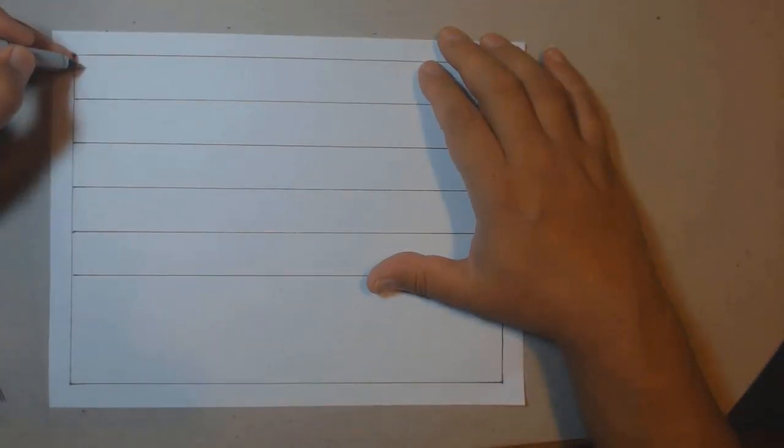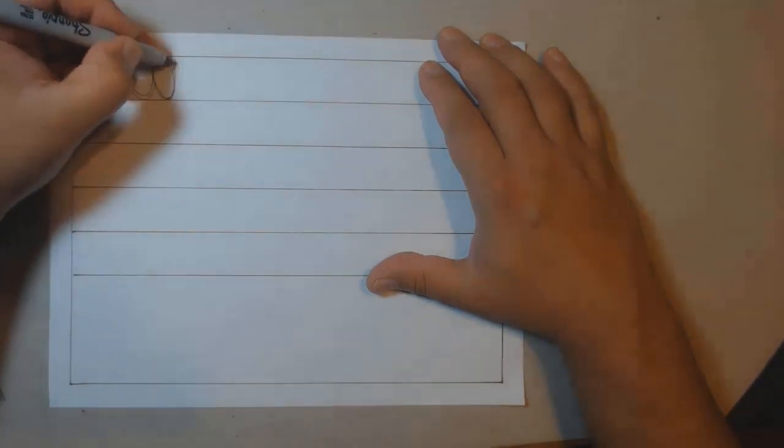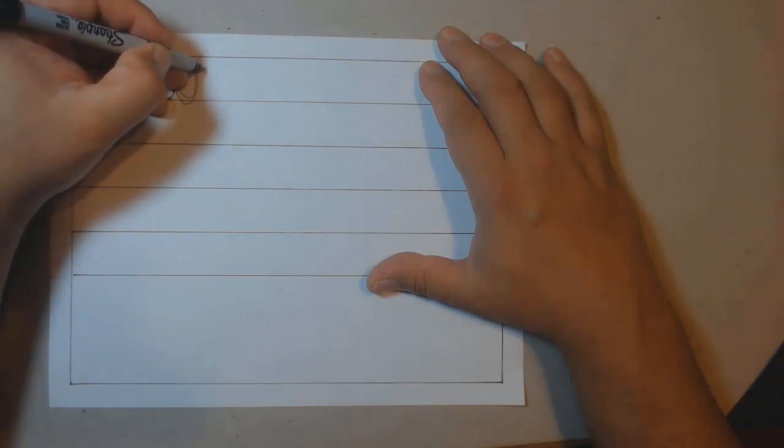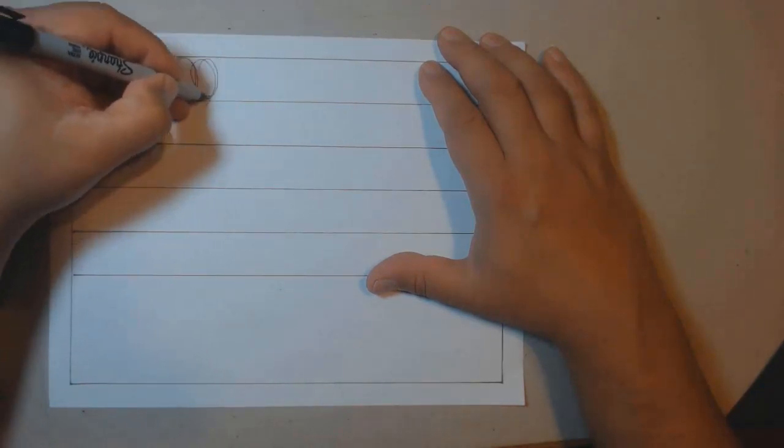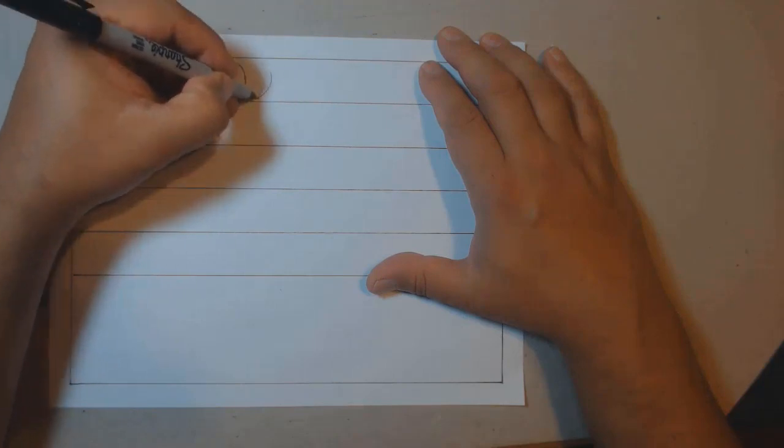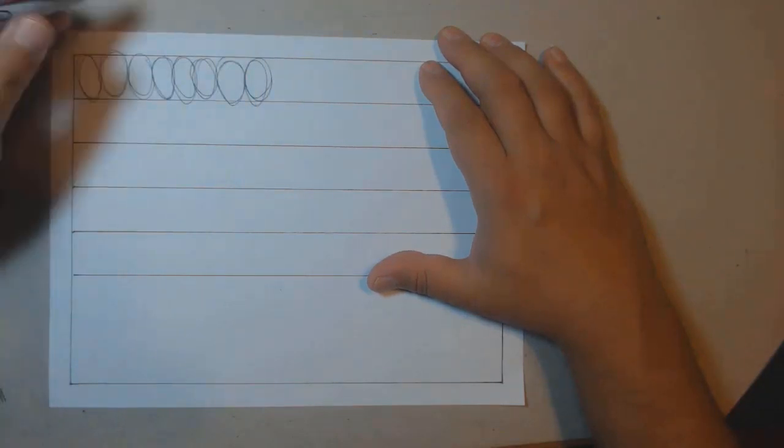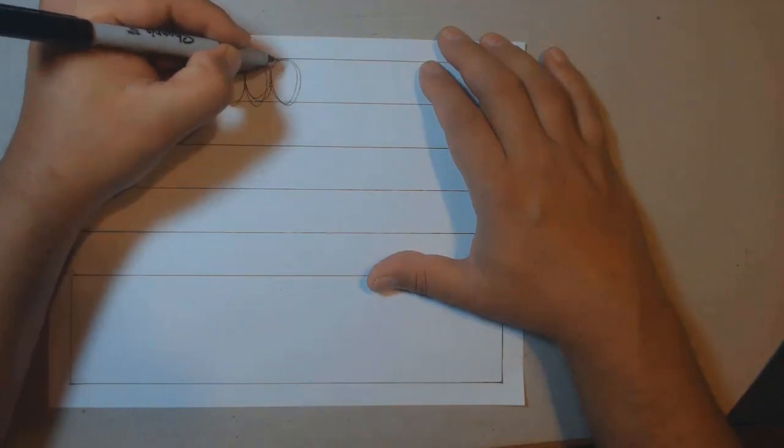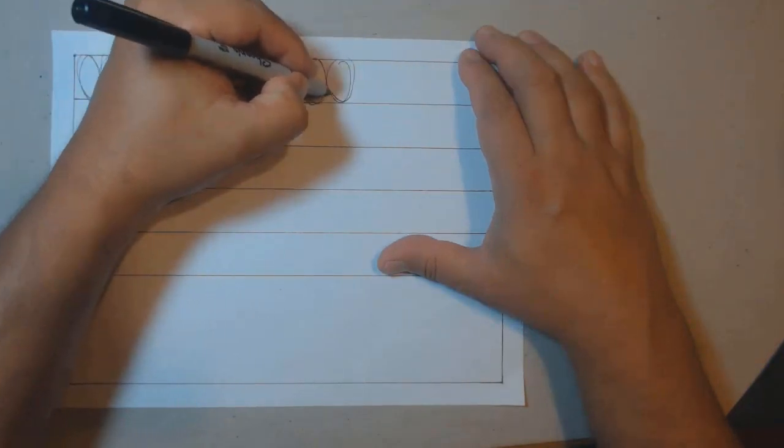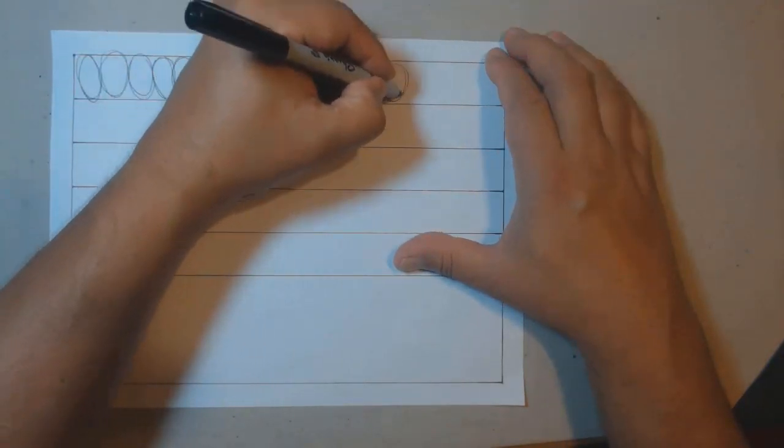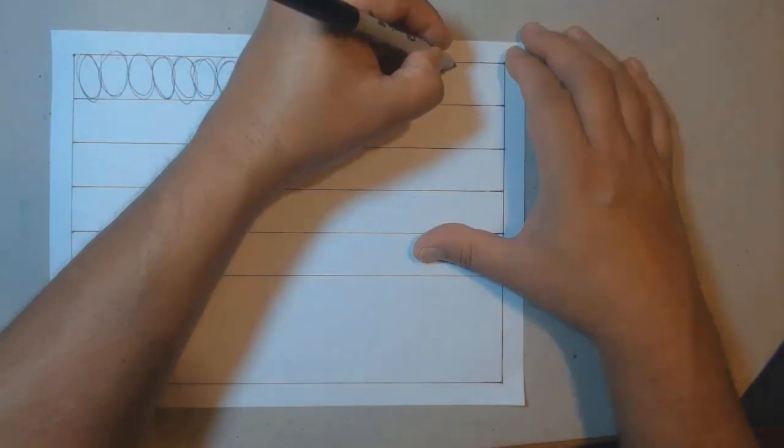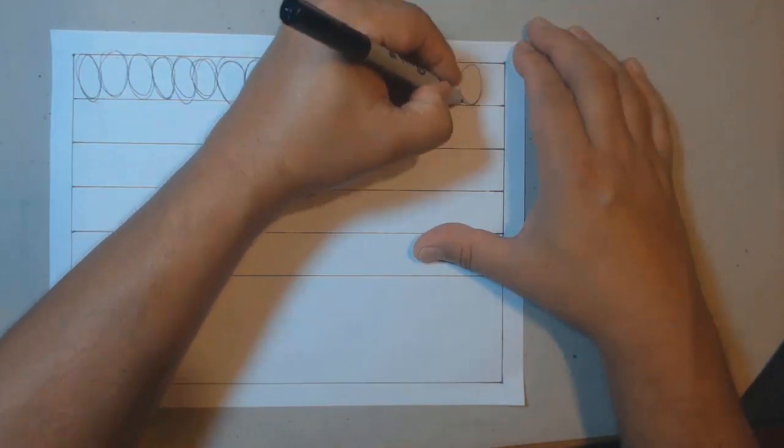Once I finished the table, I went ahead and proceeded to start. One thing I noticed right after that is I am now using my shoulder to draw lines, and I was pleasantly surprised to see that it wasn't that difficult for me to use my shoulder while drawing these ellipses. One thing though, my shoulder's a little tired, so as you can see right off the bat, I start missing my mark.